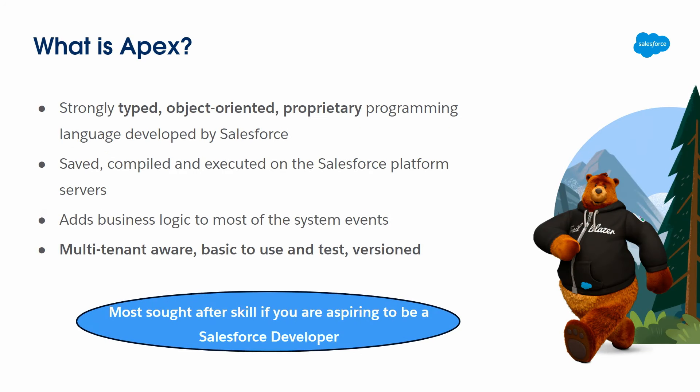How about Apex? Apex is a strongly typed, object-oriented programming language that lets developers add business logic to most system events, including button clicks, related record updates, Visualforce pages, Lightning Web Components, and more. As a language, Apex is multi-tenant aware, preventing code from monopolizing shared resources, and it's easy to use because its syntax and semantics are easy to understand.